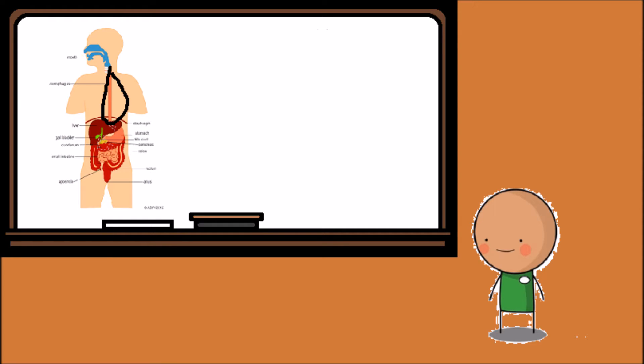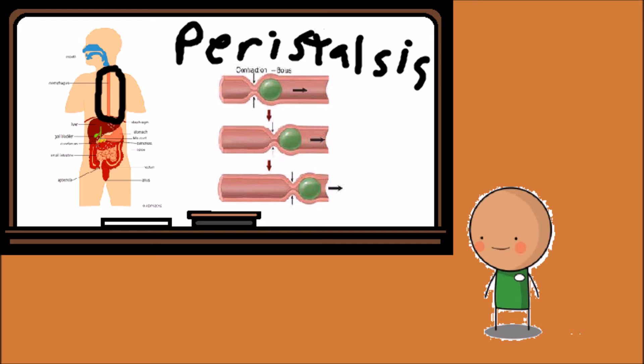This process of moving the food is called peristalsis. This is a wave-like contraction which pushes food into the stomach. This is how people are able to drink upside down, because the muscle pushes the fluid into the stomach.